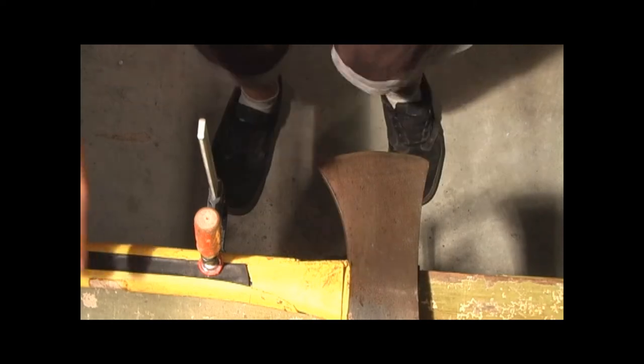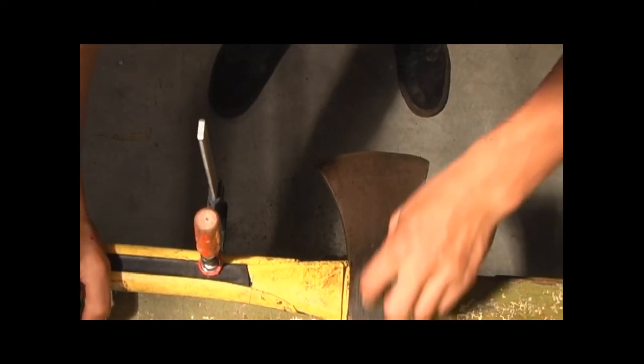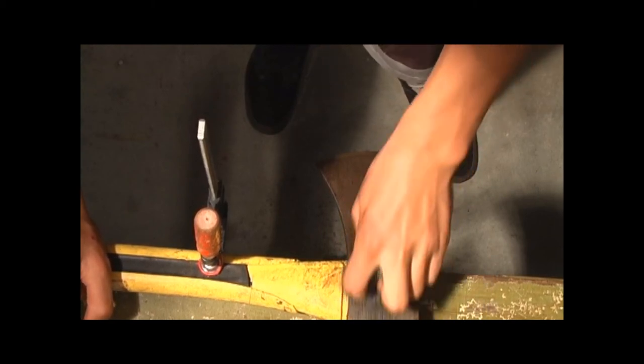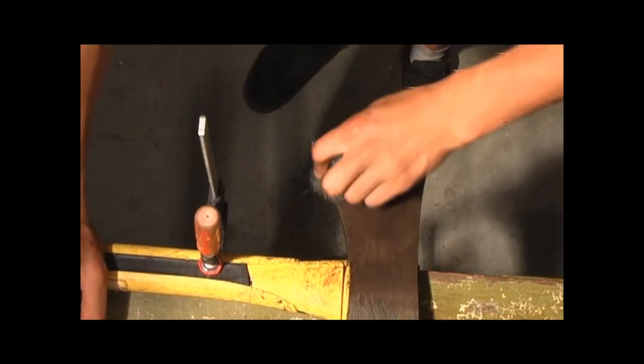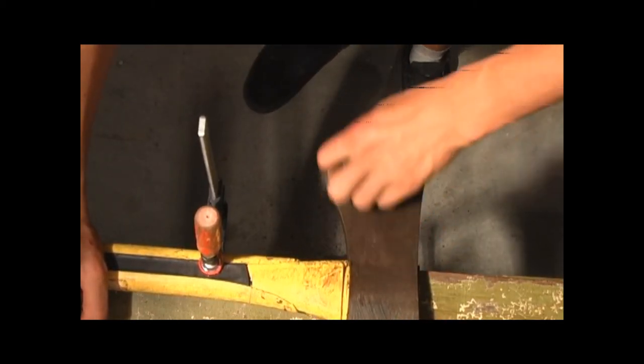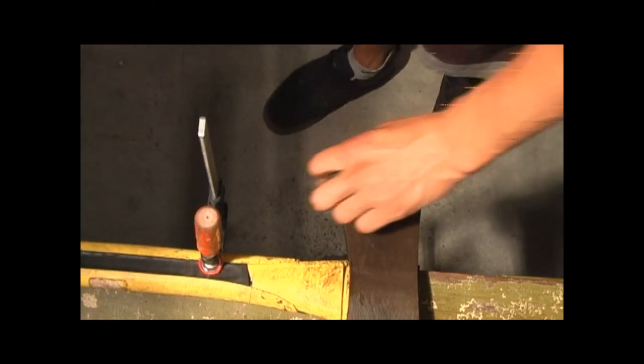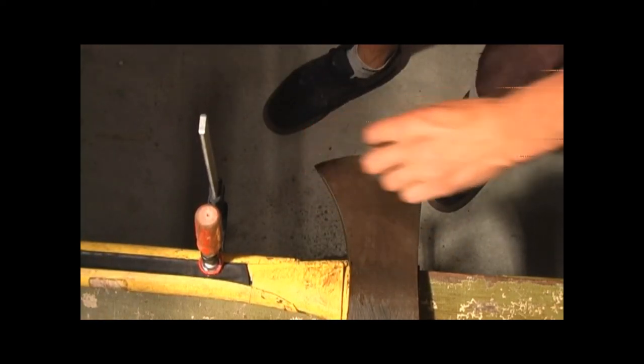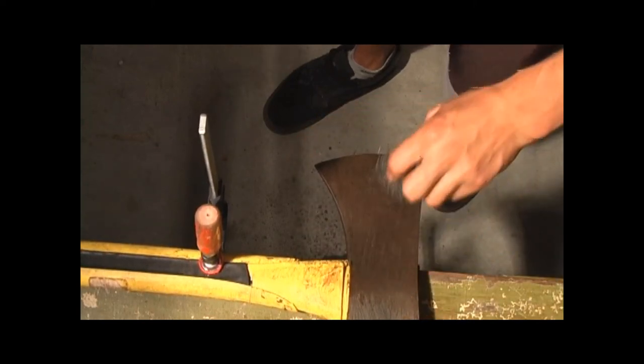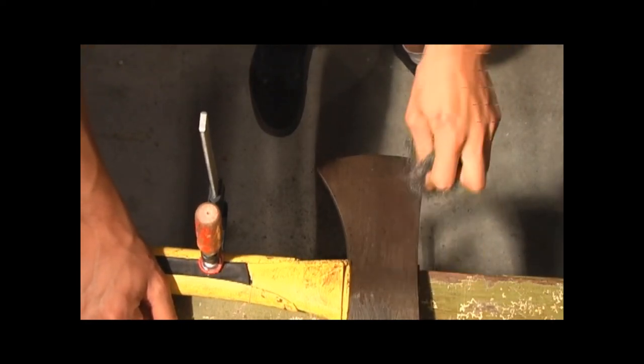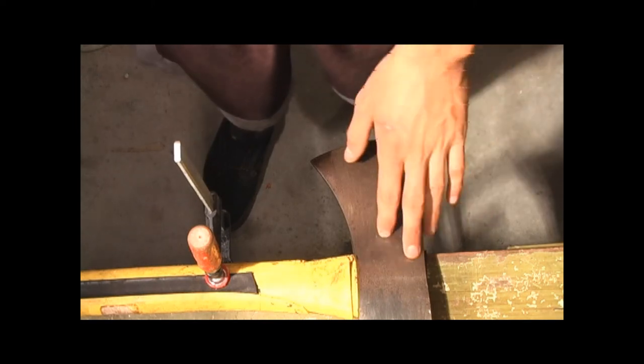Okay, so that's about it. That's how to remove rust from an axe or whatever tool you happen to be using.